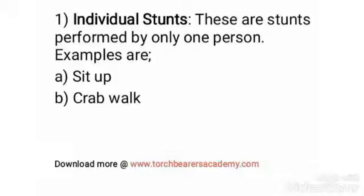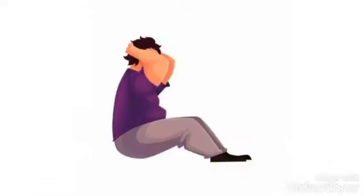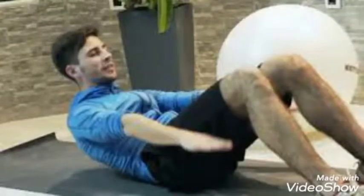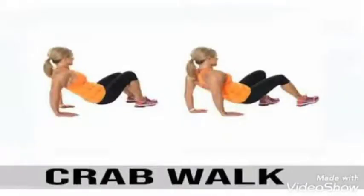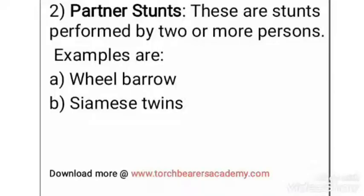Some examples of individual stunts and how they are performed: one, sit-up — this is when an athlete lies with his or her back on the floor and tries to sit up without lifting the heels from the ground. Two, crab walk — this is when one sits down and then supports his body with hands and legs and then moves around without the body touching the ground.